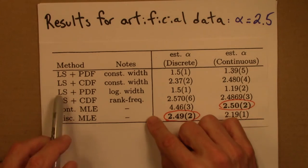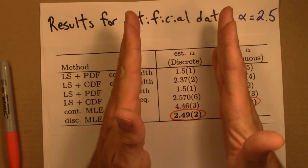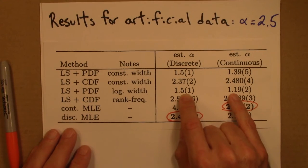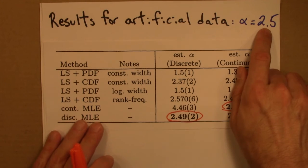We can also do a least squares fitting with logarithmic bins. That's the non-standard bin size I was describing before. That also gives crummy results. Very bad results of 1.5, 1.19. Again, the true value is 2.5.